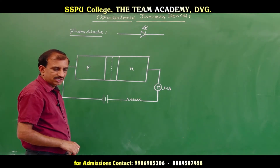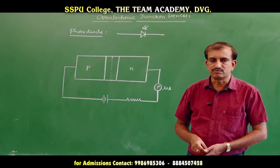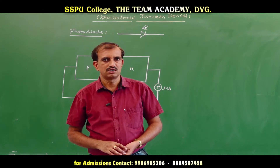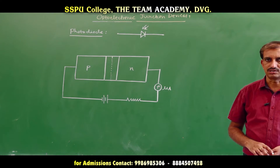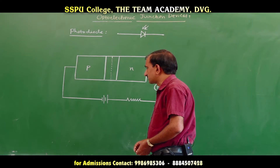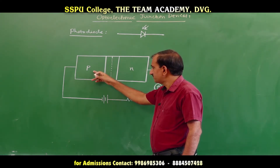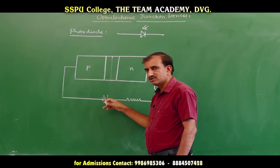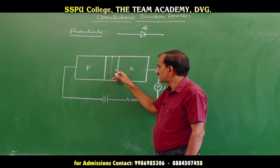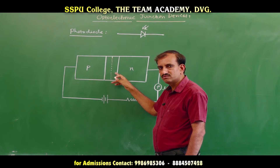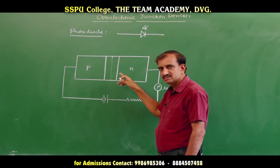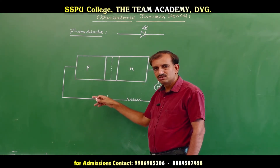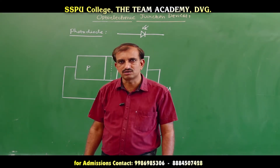When a PN junction diode is under reverse bias, no majority charge carriers can cross the junction barrier, since the height of the potential barrier increases and the width of the depletion region also increases. The minority carriers — electrons in P-type and holes in N-type — are accelerated by the electric field developed at the junction, pulling electrons from the P side and holes from the N side, producing a small current known as the reverse saturation current.